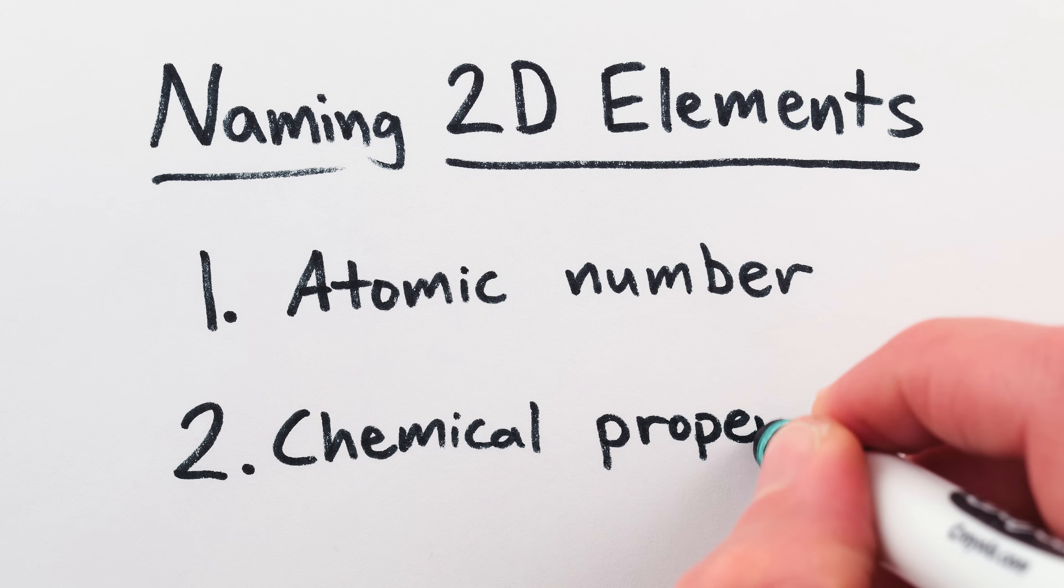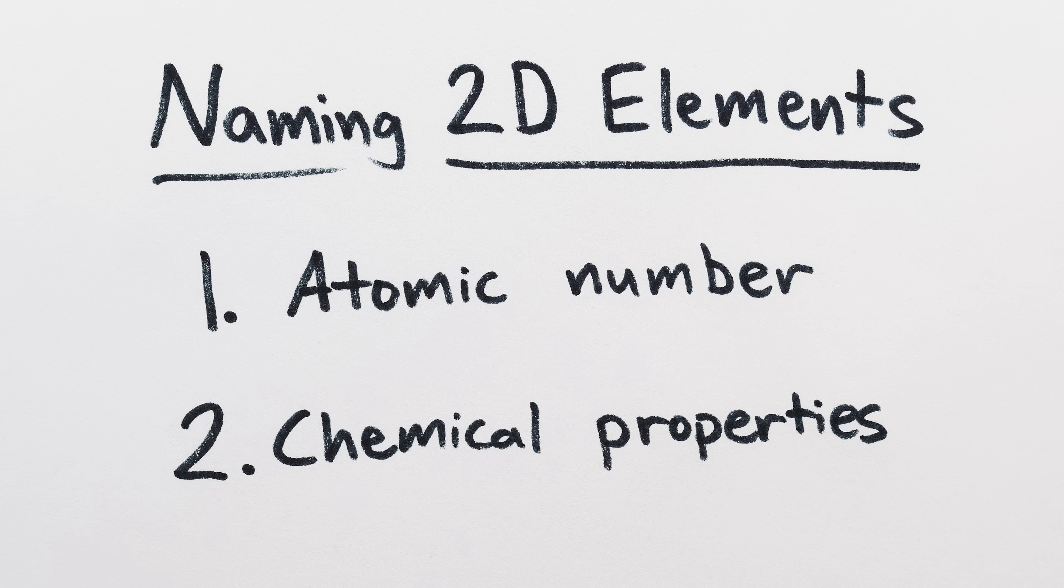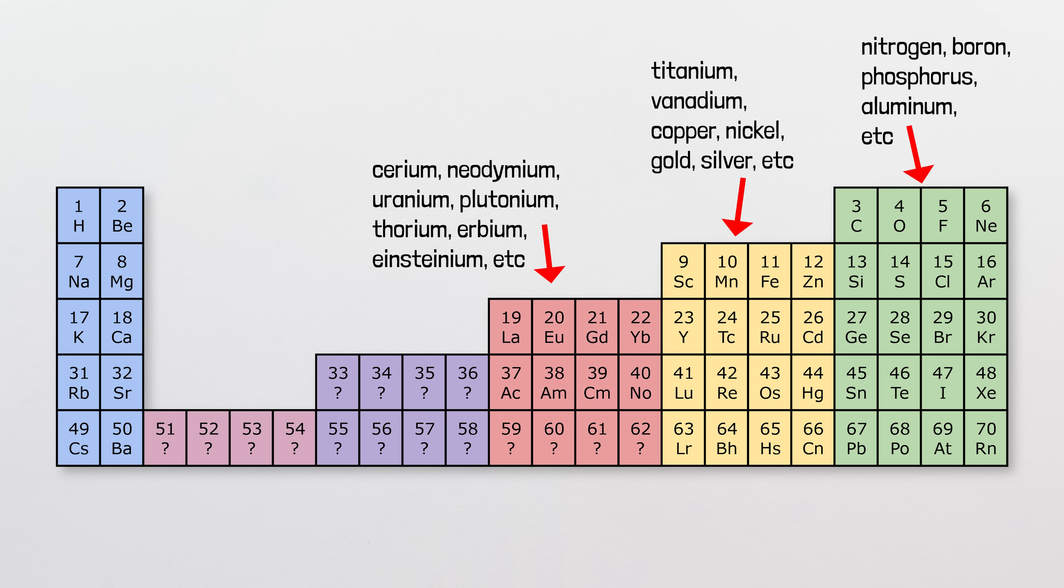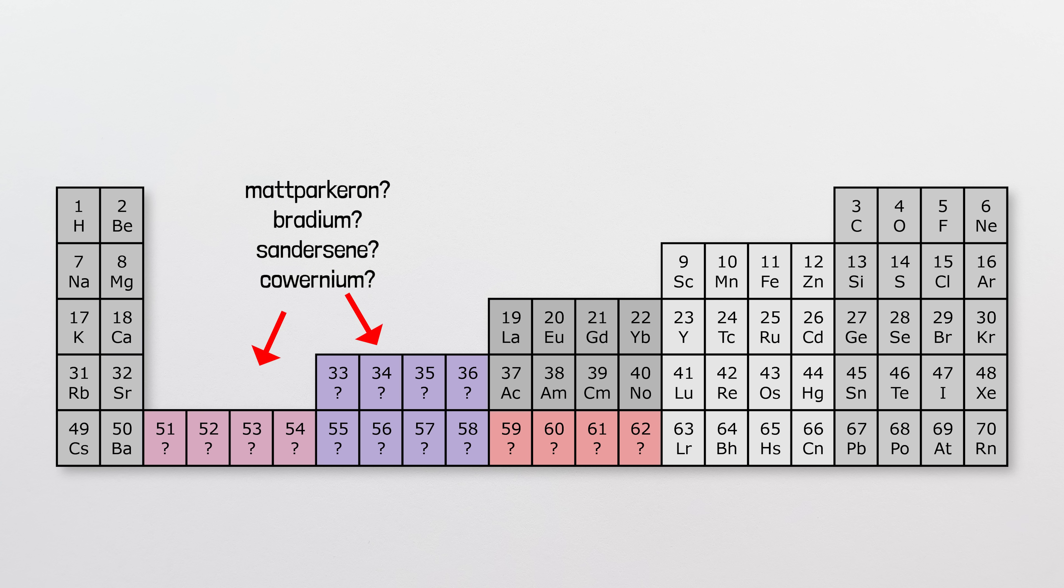The other proposal is to name 2D elements based on the equivalent chemical properties, so that the noble gases are still neon, argon, krypton, etc., the halogens are still fluorine and chlorine, and so on. This second naming proposal means we leave out a lot of names, but we also get to add some new ones because there are blocks in the 2D periodic table that we don't have in the 3D one.